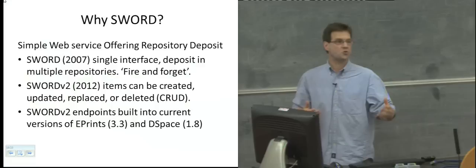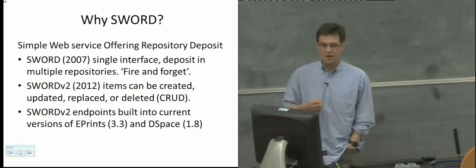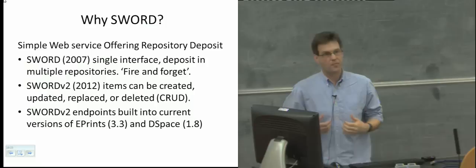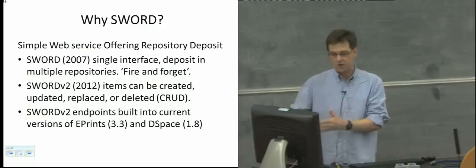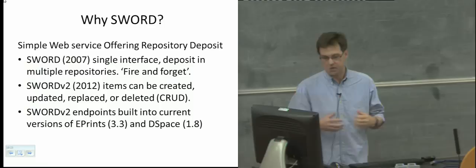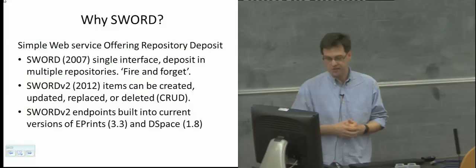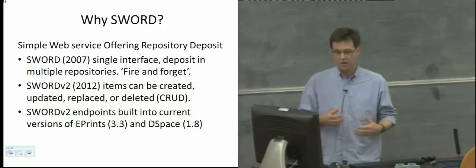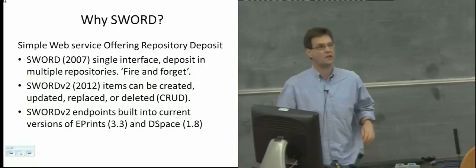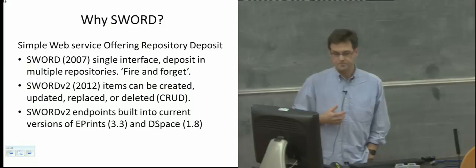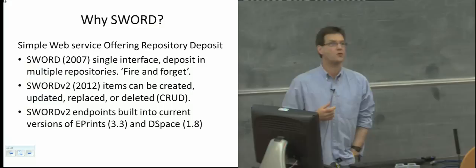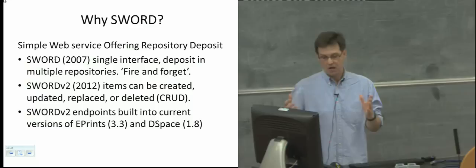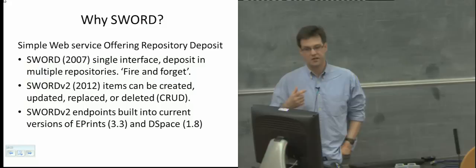With SWORD 2, which was released earlier this year, you can now add update and delete functions — with SWORD 1 you could only deposit and not really do anything with what you'd deposited. SWORD 2 gives you much greater scope for more interactivity between the user and the repository. If you want to use SWORD 2, it's now built into the current versions of ePrints and DSpace, and this was partly achieved through the Deposit MO project.